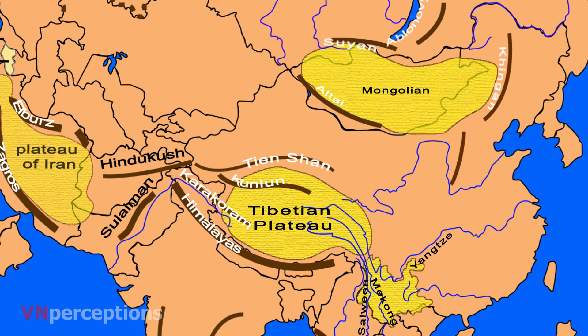Next is the Mongolian Plateau. It has an area of approximately 3.2 million square kilometres. It is bounded by the Greater Khingan Mountains in the east, the Yin Mountains to the south, the Altai Mountains to the west, and the Sayan and Khentii Mountains to the north. The plateau includes the Gobi Desert as well as dry steppe regions. It has an elevation of roughly 1,000 to 1,500 metres, with the lowest point in Hulunbuir and the highest point in the Altai.